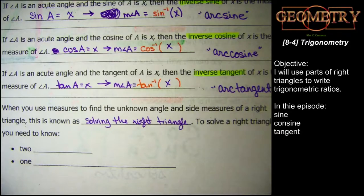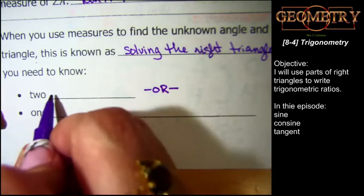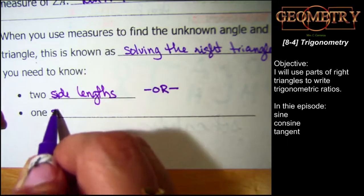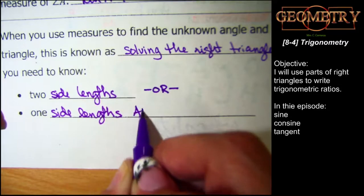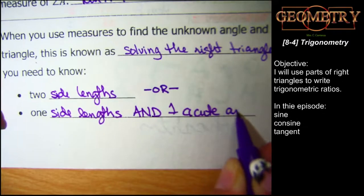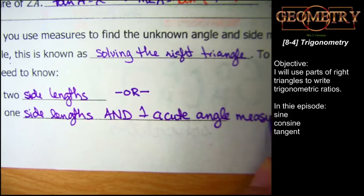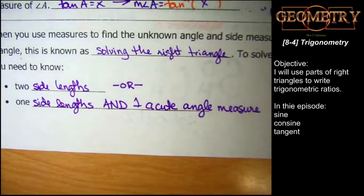Using these inverse trig ratios to find missing information is called solving the right triangle. On a worksheet you might see 'solve' with a picture of a right triangle — that means use trigonometric ratios and inverses to find all the missing angles and sides. To do this, you must be given either two side lengths, or one side length and one acute angle measure.